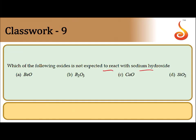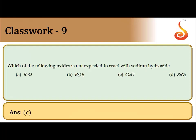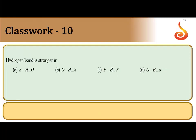Which of the following oxides is not expected to react with sodium hydroxide? NaOH is a base, so it can only react with amphoteric and acidic oxides. BeO is amphoteric, B₂O₃ and SiO₂ are acidic. CaO is a metallic oxide and is basic in nature — same nature as NaOH — so it is not expected to react with NaOH. The answer is option C.